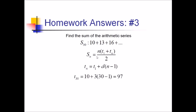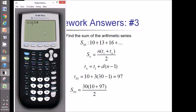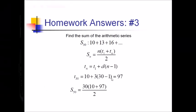Plugging it all back in then, we've got sum of 30 equals 30 times 10 plus 97 all over 2. And for this, I am going to use the calculator. That comes out to 1,605.